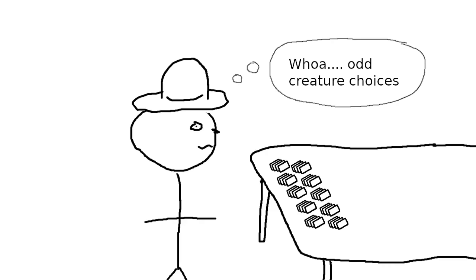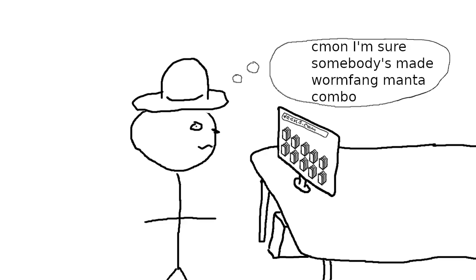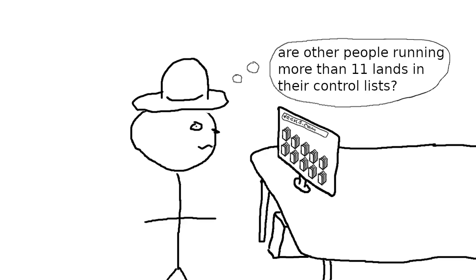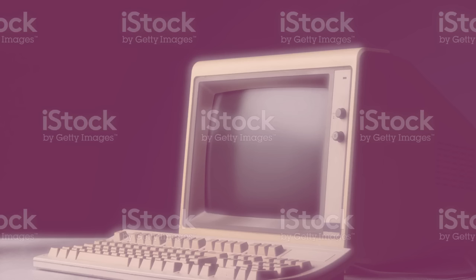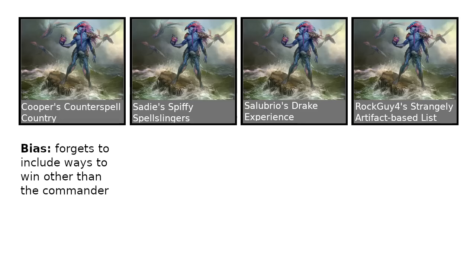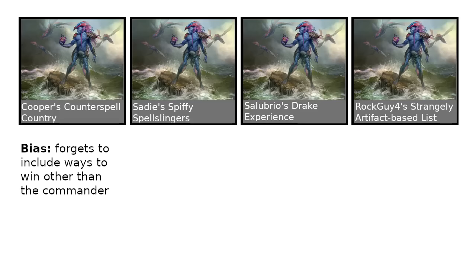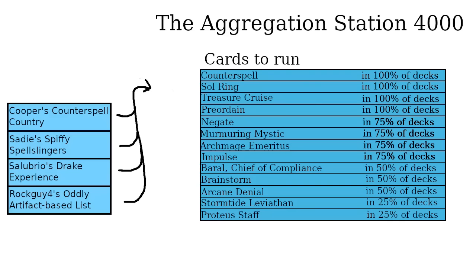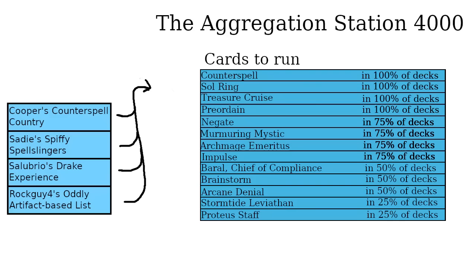Another major piece of deck building is looking at other people's decks, either physically or through websites where people post their decks. This could be the last step in deck building to find cards you might have missed, the first step where you're trying to get inspiration, or somewhere in the middle where you're trying to hammer out the structure of the deck. Now, let's try out a little thought experiment and say that we're trying to use the power of technology to simplify deck building. What if we could look at all similar decks at the same time, seeing cards based on how often other people choose to run them?